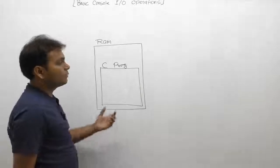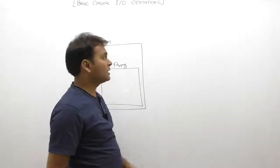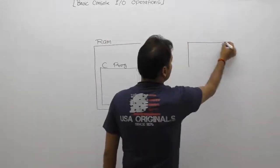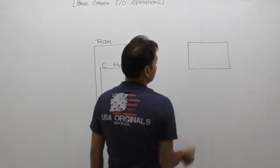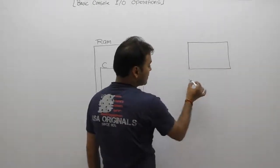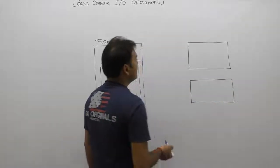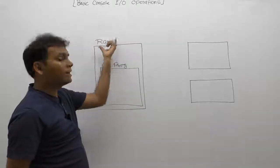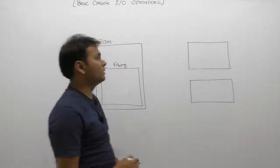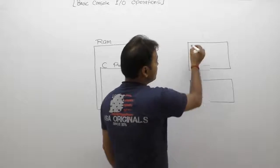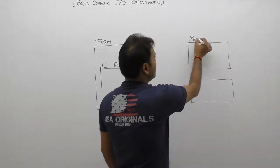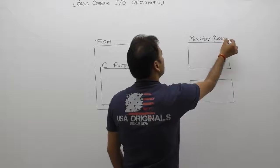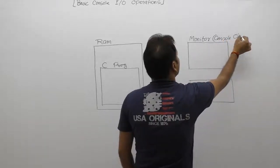If you have inputs to provide, inputs are provided through the keyboard. So we are introducing some other devices — keyboard and monitor. Similarly, if you have data to send for output display, it goes to the monitor. The monitor is nothing but a console output device.